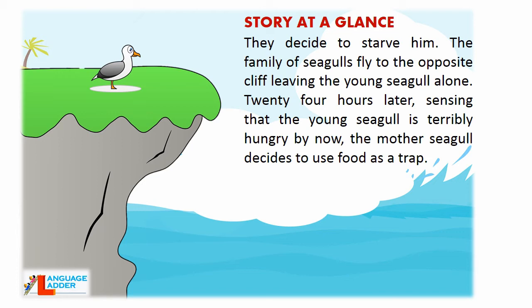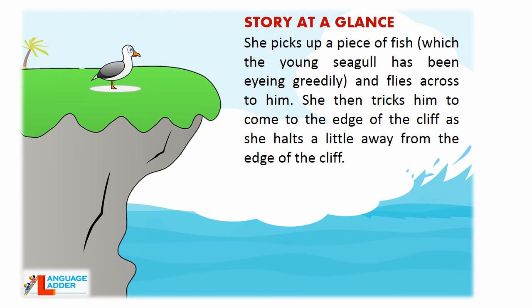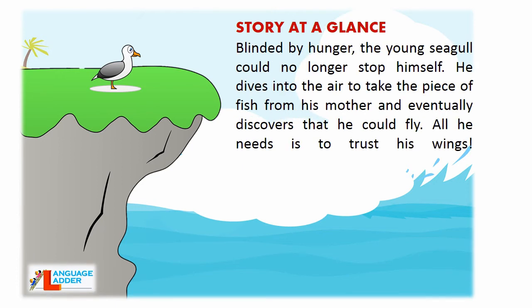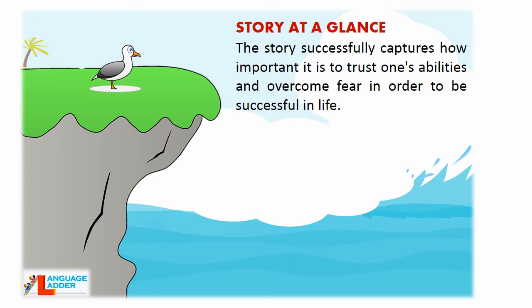24 hours later, sensing that the young seagull is terribly hungry, the mother seagull decides to use food as a trap. She picks up a piece of fish, which the young seagull has been eyeing greedily, and flies across to him. She then tricks him to come to the edge of the cliff by hauling a little away. Blinded by hunger, the young seagull dives into the air to take the piece of fish from his mother and eventually discovers that he could fly. All he needs is to trust his wings. The story successfully captures how important it is to trust one's abilities and overcome fear in order to be successful in life.